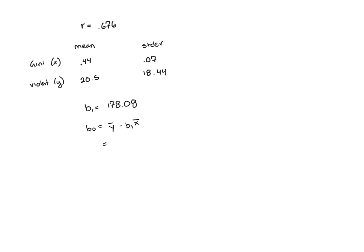Plugging these in here, y-bar is the average of my y's, x-bar is the average of my x's. I'll have 20.5 minus b1, which is 178.08, times x-bar, which is 0.44. This should give me a value of negative 57.86 when it's rounded.